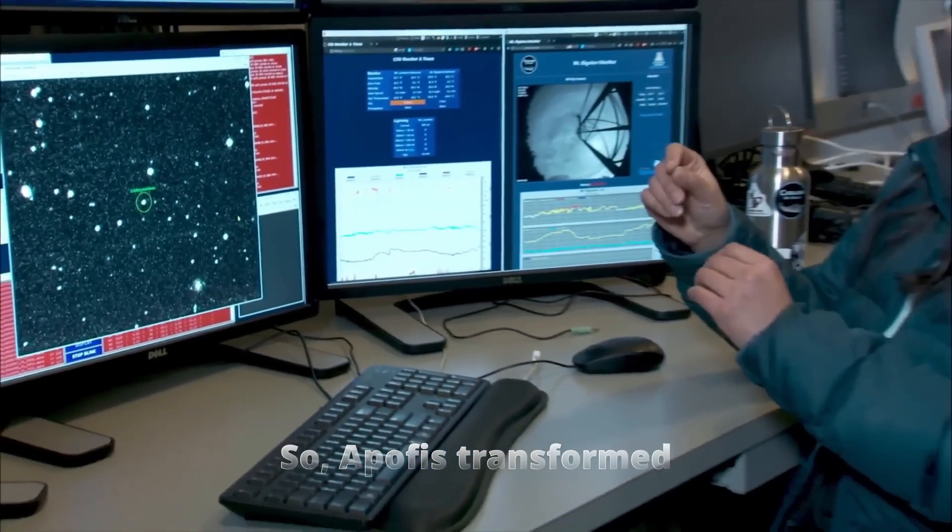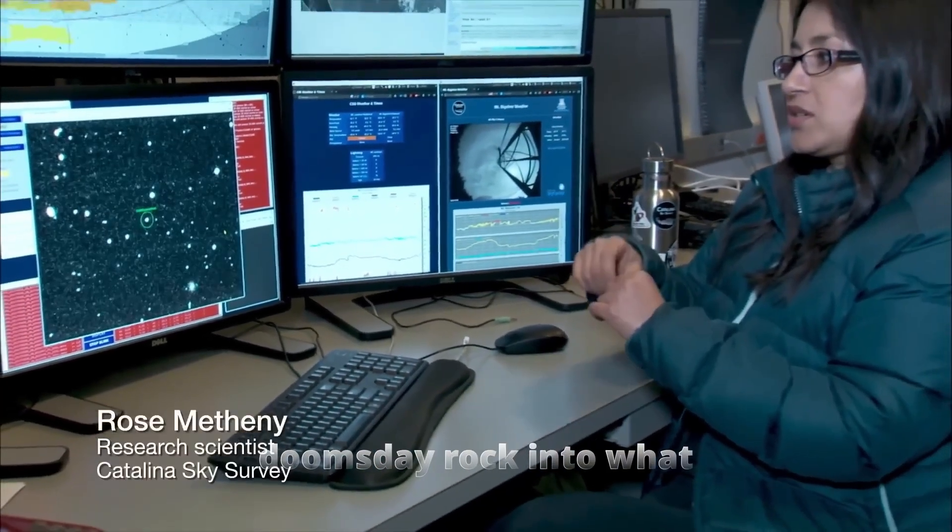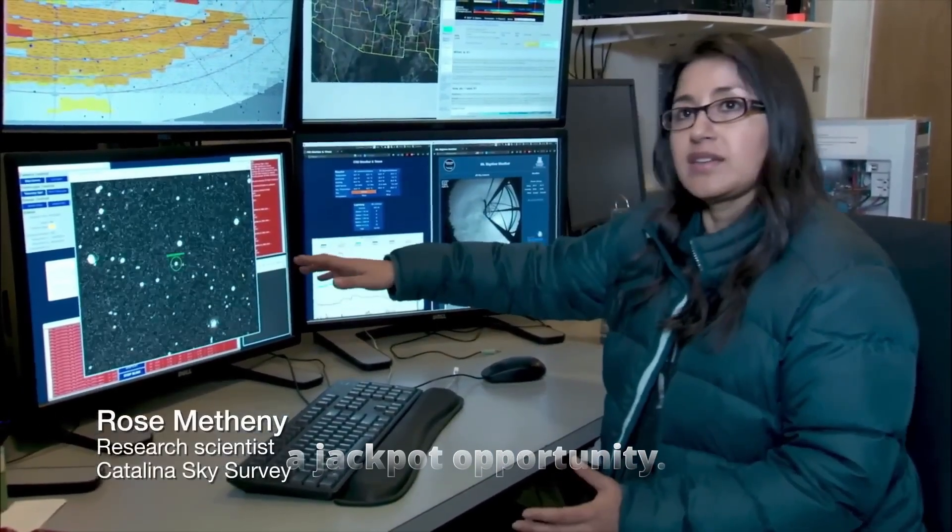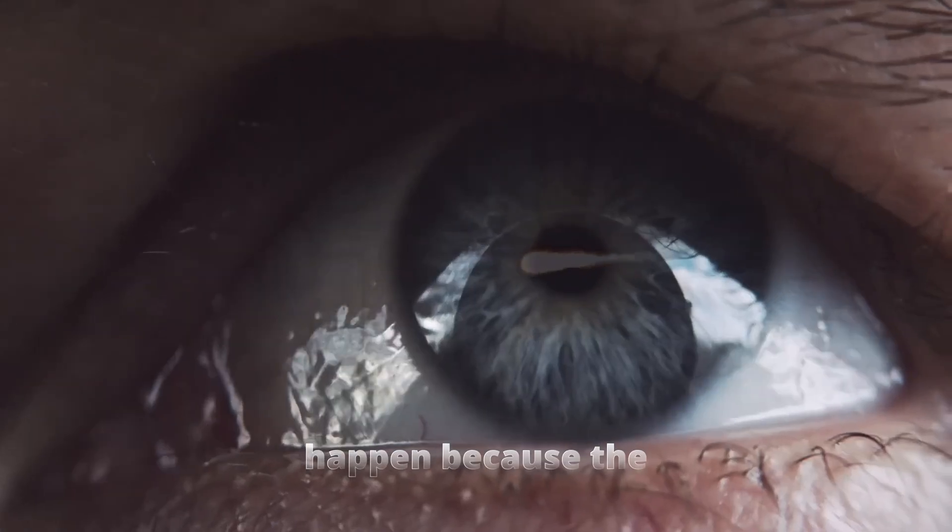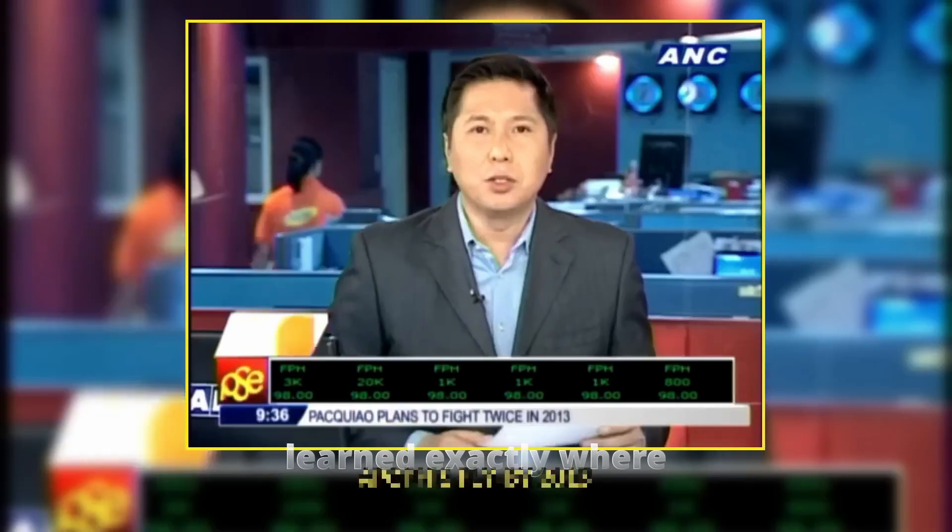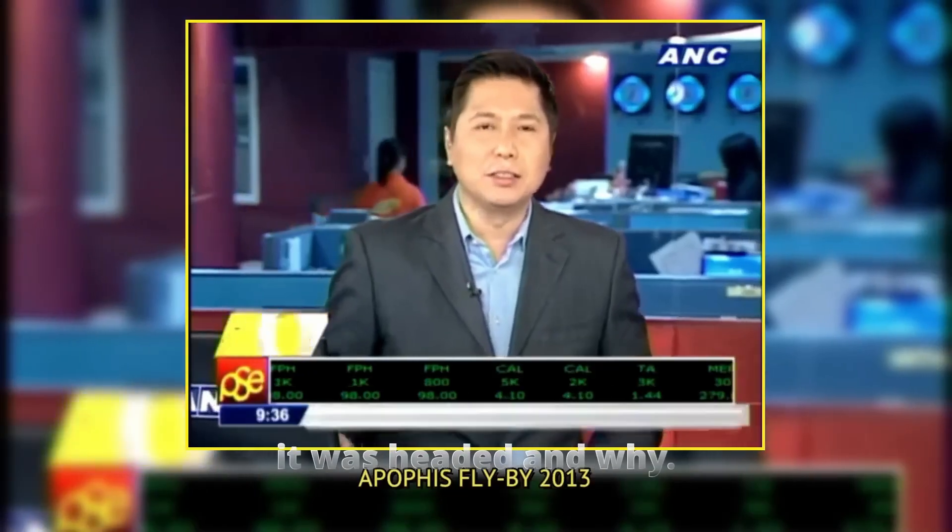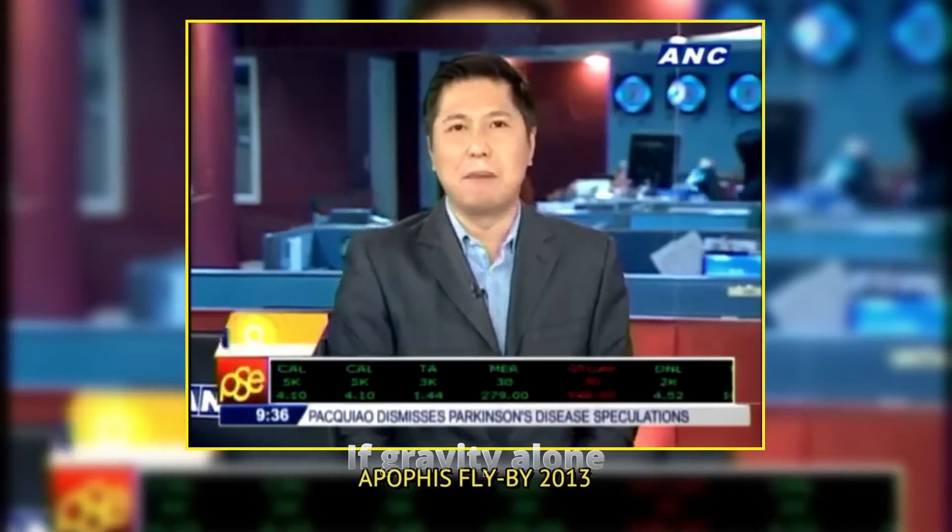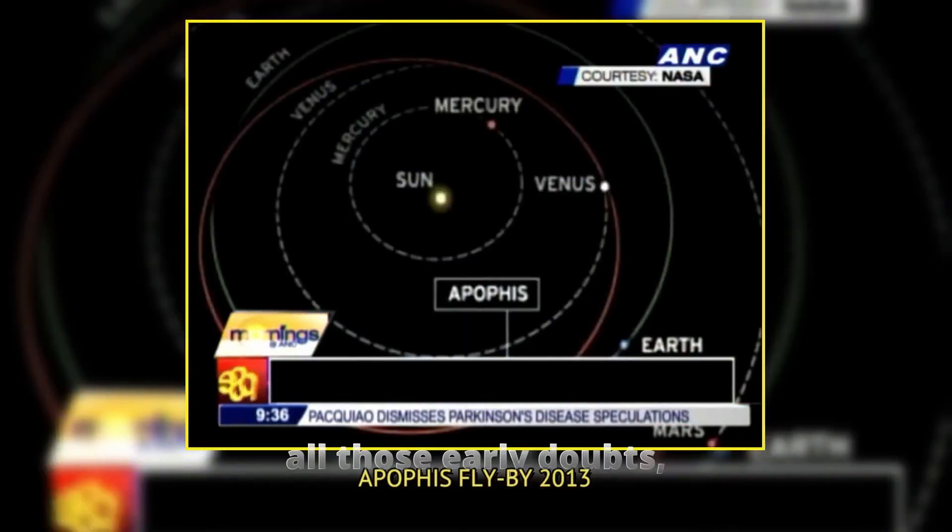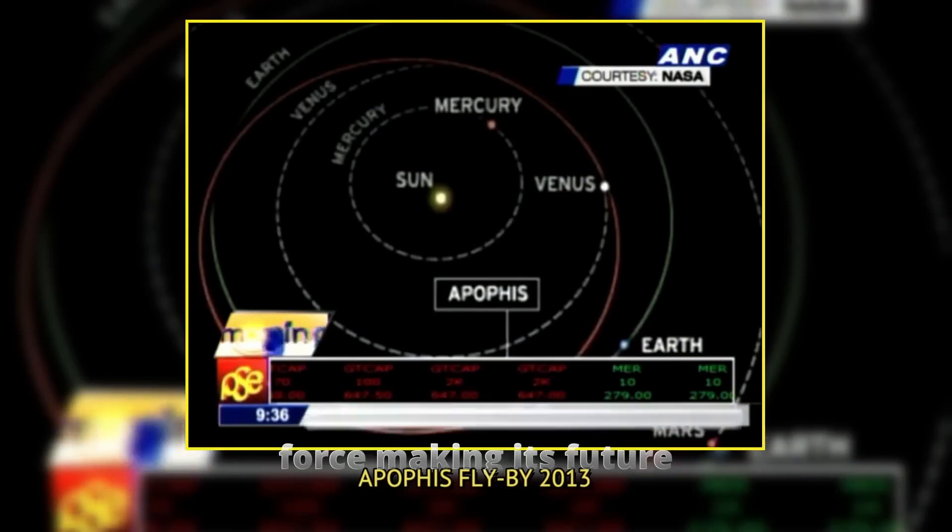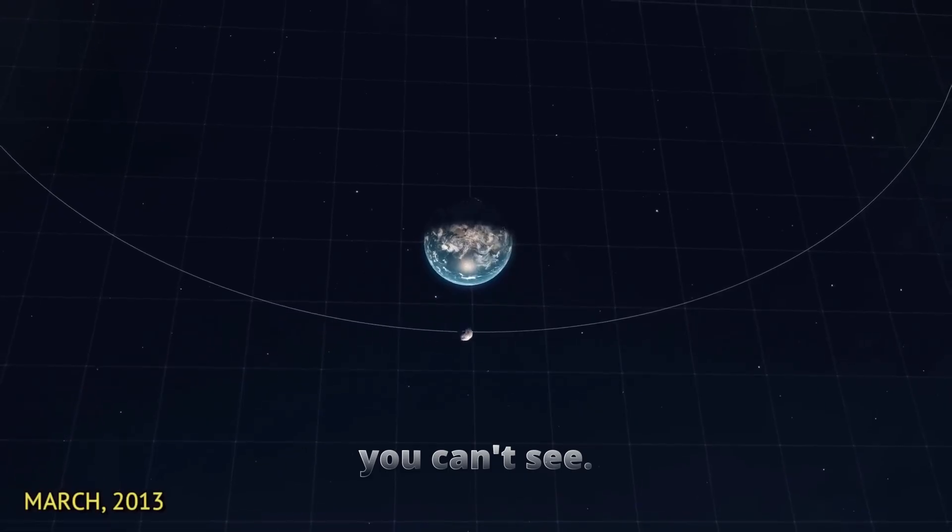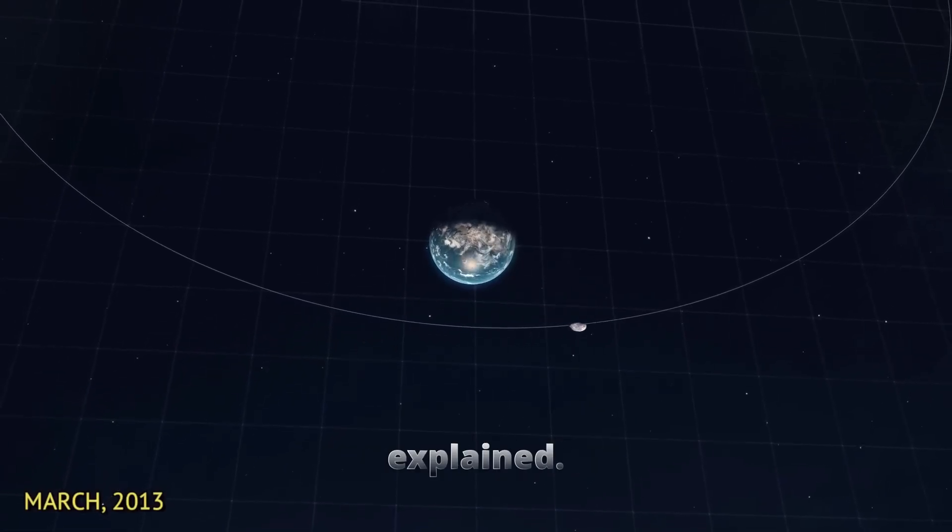So, Apophis transformed from a potential doomsday rock into what scientists now call a jackpot opportunity. That shift didn't happen because the asteroid changed course suddenly, but because we learned exactly where it was headed and why, which leads to the next puzzle. If gravity alone can't explain all those early doubts, what was the hidden force making its future so hard to pin down? The subtle push you can't see. Yarkovsky effect explained.